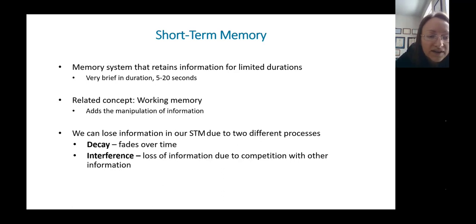There are two ways that we lose information in our short-term memory. Decay is the idea that it just fades over time. Interference is the idea that we lose information because of competition with other information. You think about something else and you forget what you're thinking about before.